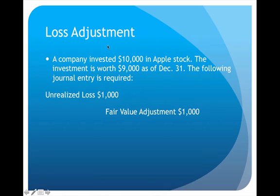It's also possible that the value of an investment might have gone down. If that's the case we still have to do the adjustment, but the journal entry looks a little different. In this alternate version, we have a $10,000 investment in Apple, but at the end of the year it was worth only $9,000 — it's gone down by $1,000. This time I will debit unrealized loss and credit fair value adjustment.